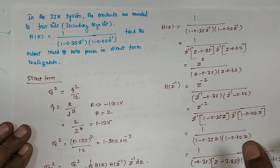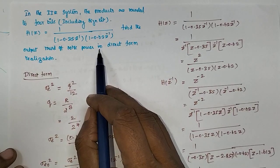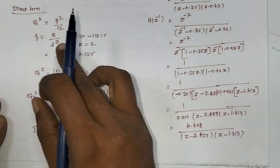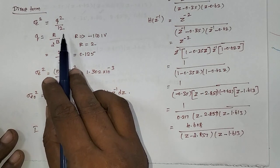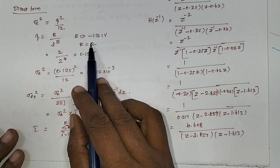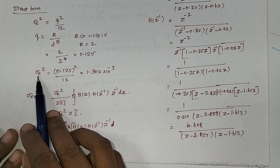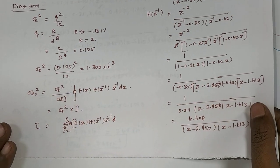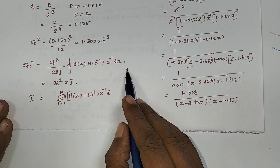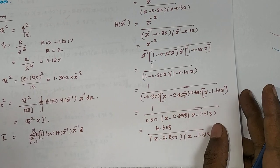To summarize: this problem is about the effect of finite word length due to product quantization error in an IIR system with 4-bit precision including the sign bit, to find the round-off noise power in direct form realization. First, find quantization noise variance using sigma e squared equals q squared divided by 12, where q equals range divided by 2 to the power b. Since range is not given, use minus 1 to plus 1, giving q equals 2 divided by 2⁴ equals 0.125, and error variance equals 1.302 times 10⁻³. The output noise variance uses the closed contour integral of H(z) H(z⁻¹) z⁻¹, solved by residuals.